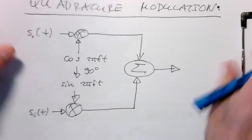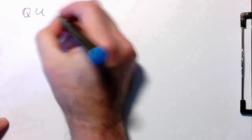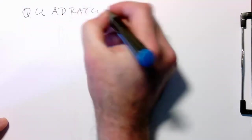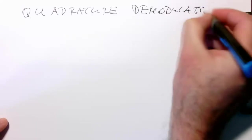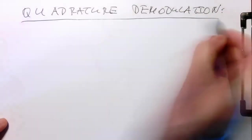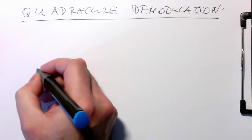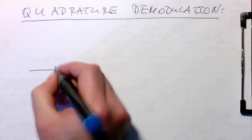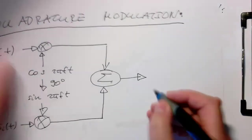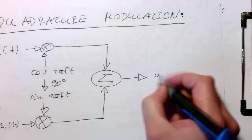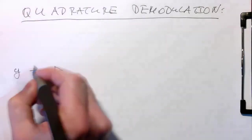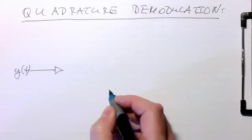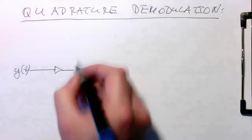And then on the receiving side, if we call this the quadrature demodulation, we do just the opposite. So we are receiving this mixed signal here. Let's call this here just y of t. And then after I send it through our channel here, we are receiving this signal here. And so what we do is we split this up.